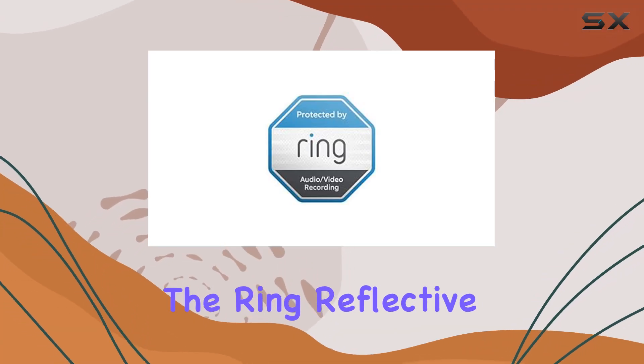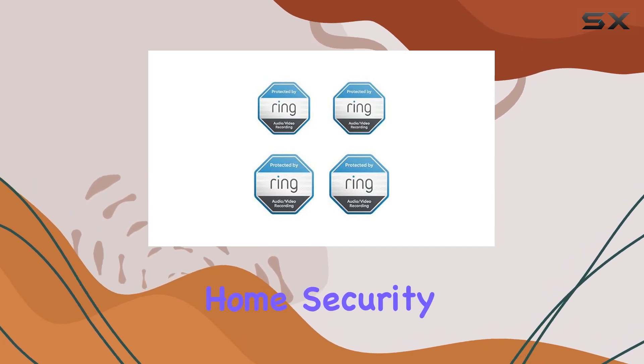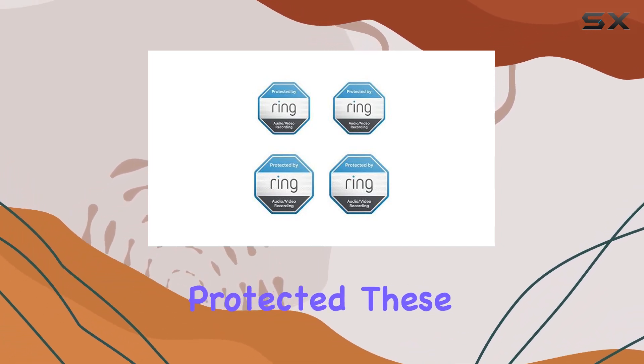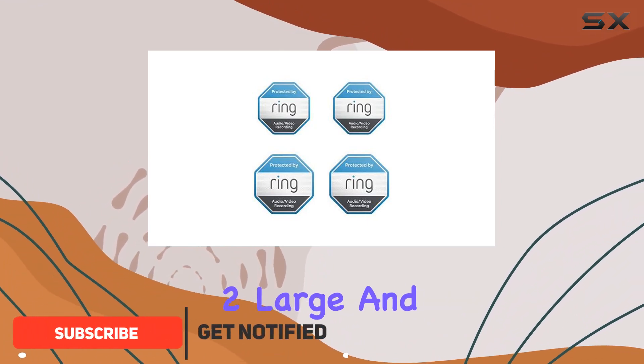Today we're talking about the Ring reflective security stickers. If you're looking to boost your home security and let your neighborhood know you're protected, these might be the solution for you. The pack includes four stickers, two large and two small, designed specifically for outdoor placement.